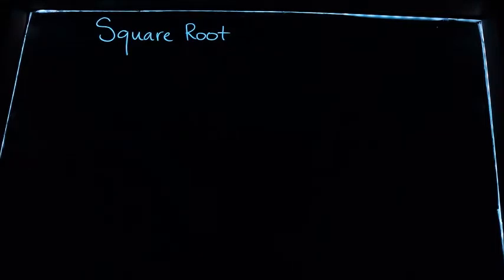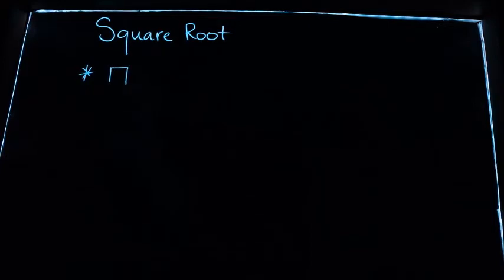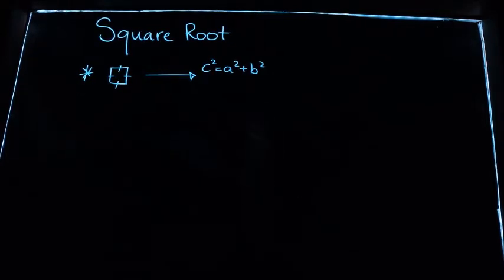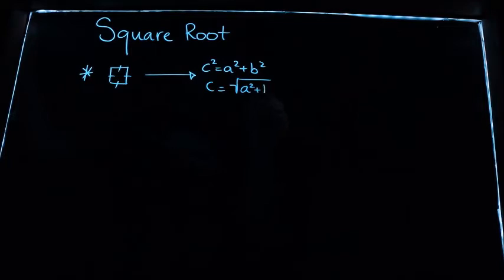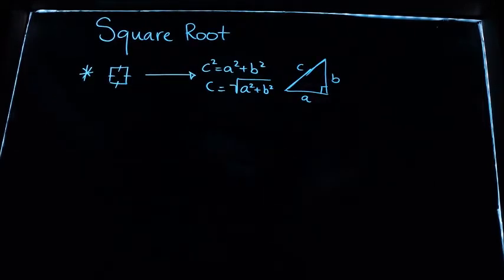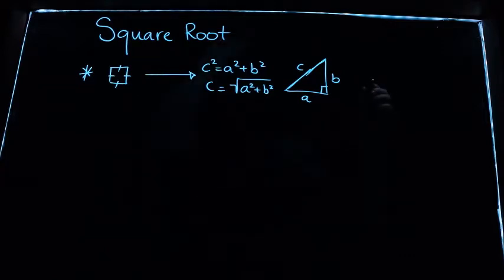We want to work on the square root, and it's really important to remember our journey here. We've been talking about square numbers and how to build them, and we're on a journey toward Pythagoras. We need to stop and talk about the square root because part of the work we do involves taking the square root, or rearranging the formula to find the hypotenuse - the longest side - given information from the other two shorter sides. We're just stopping to understand a little bit more about this square root symbol.